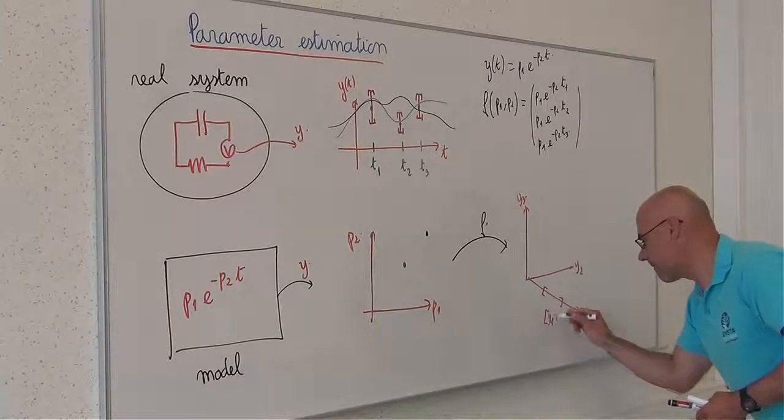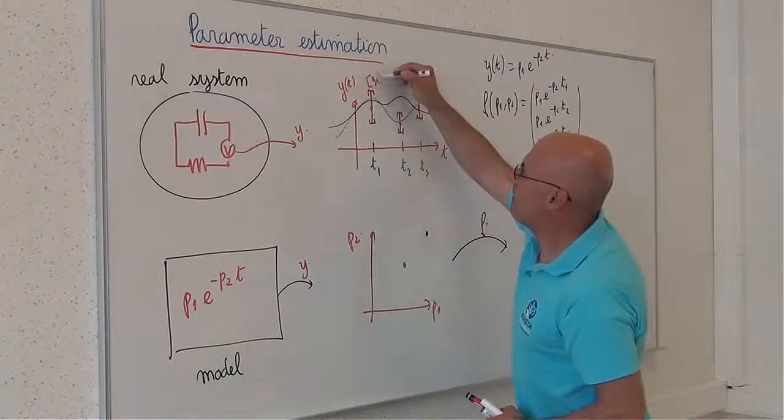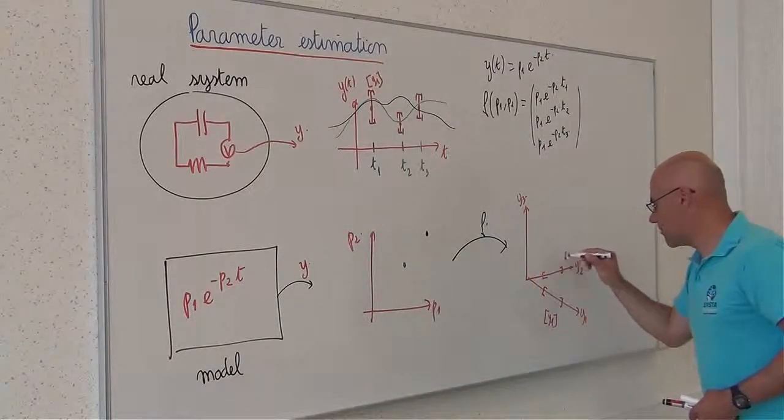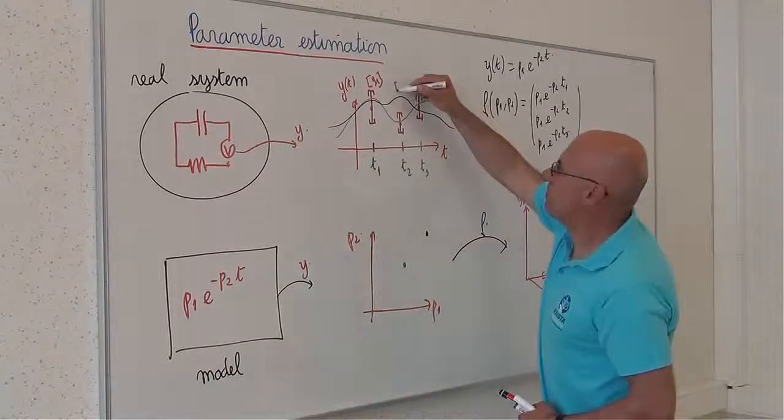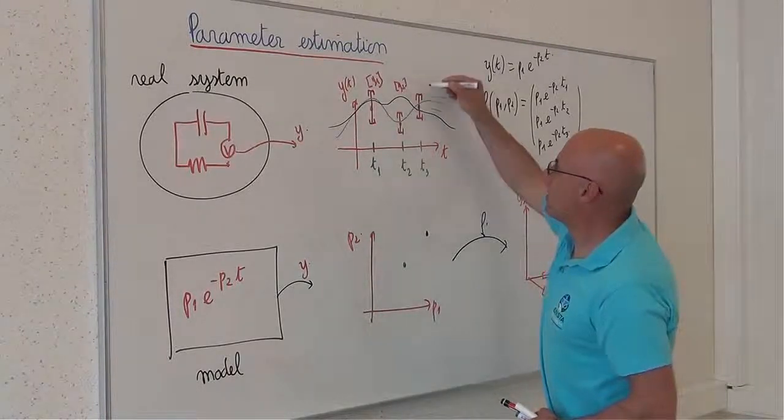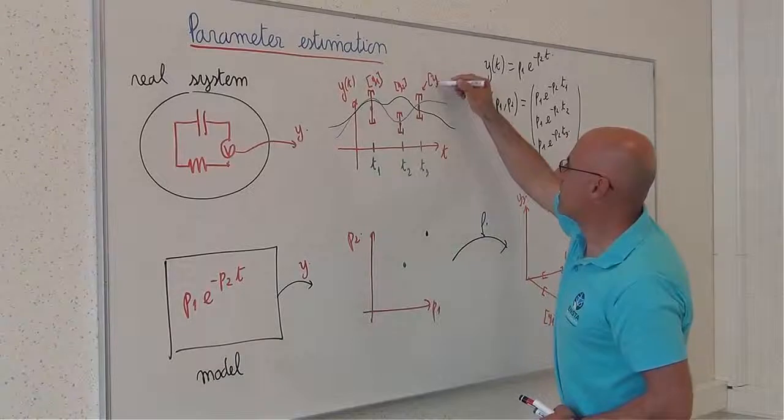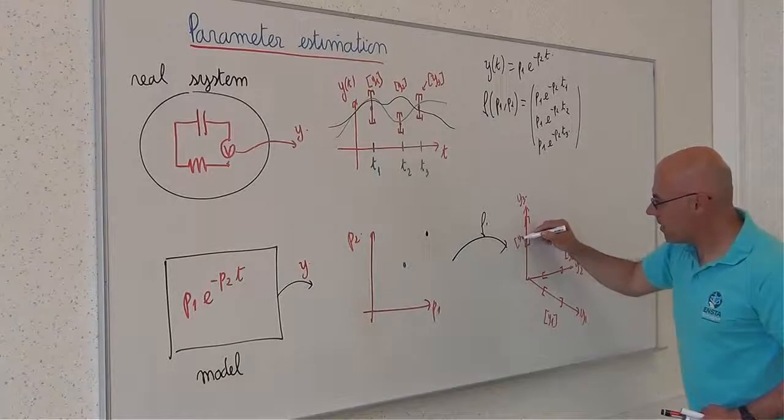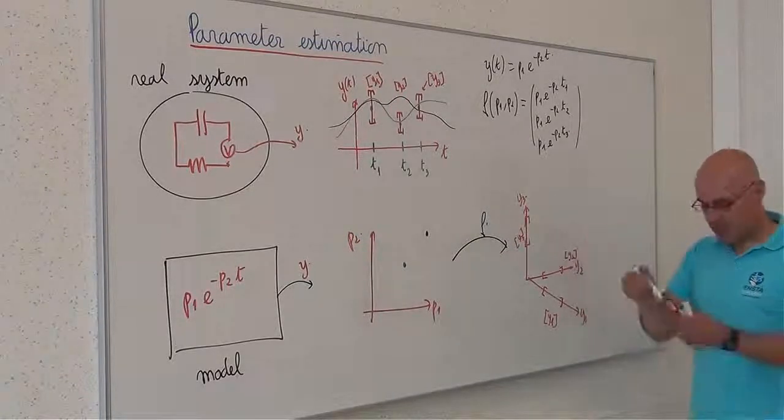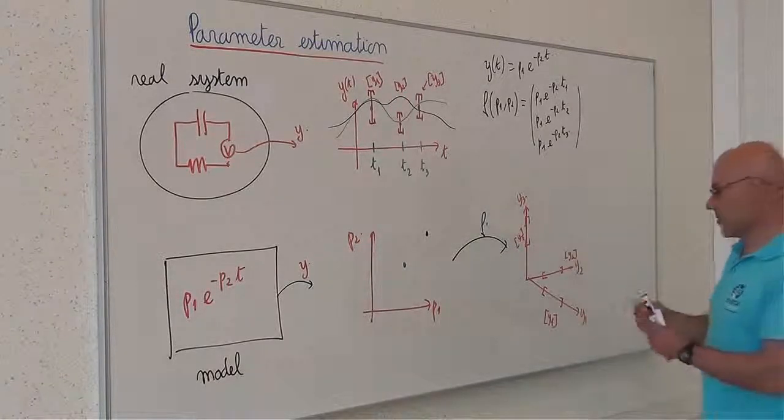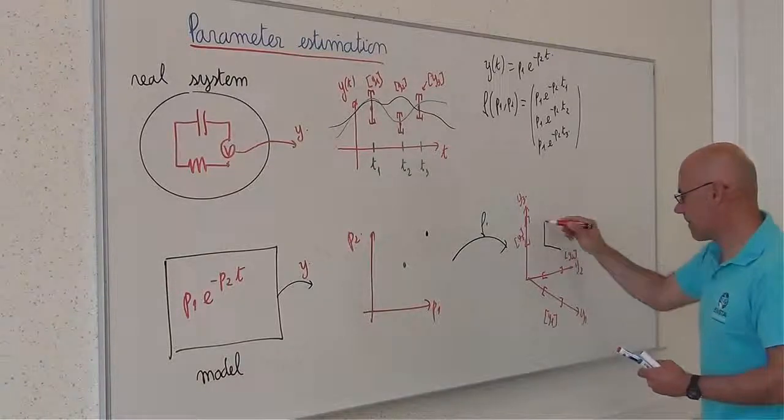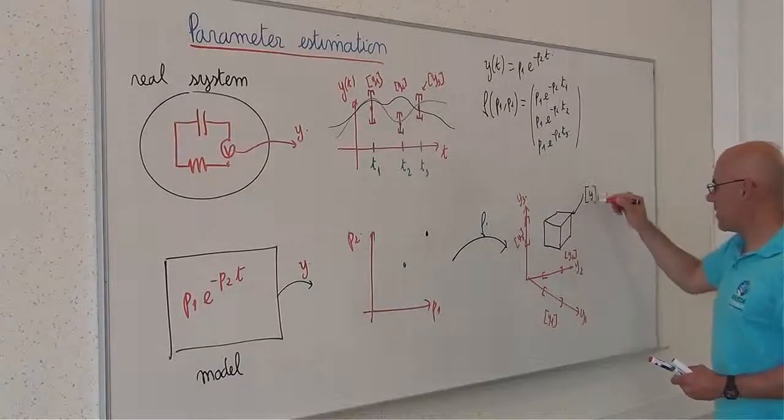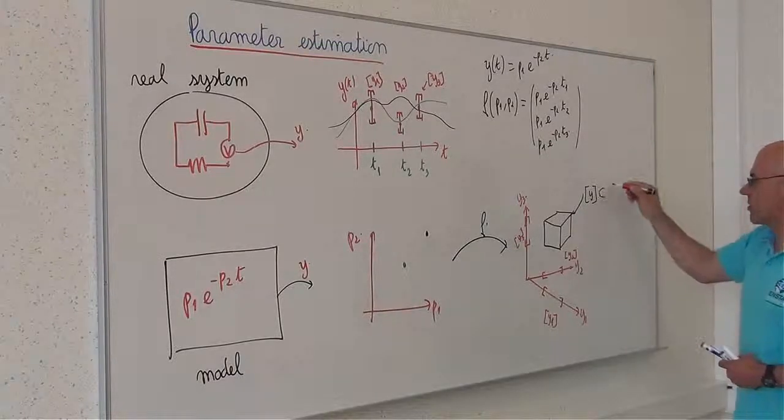The intervals here correspond to some intervals. Here, Y1 bar, Y2 bar, and here the last one Y3 bar. The Cartesian product of these three intervals corresponds to one box Y, which is included in R3.